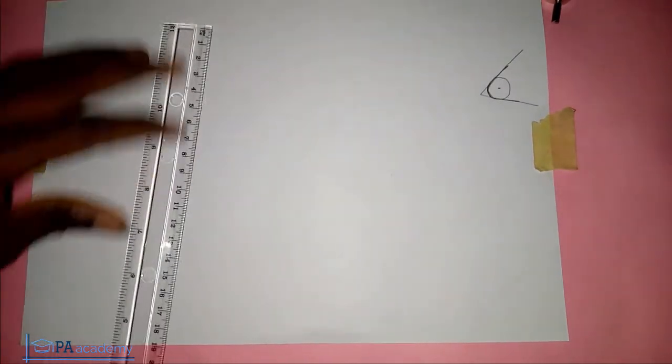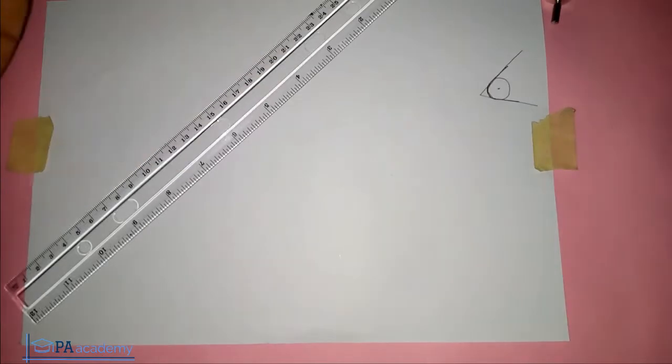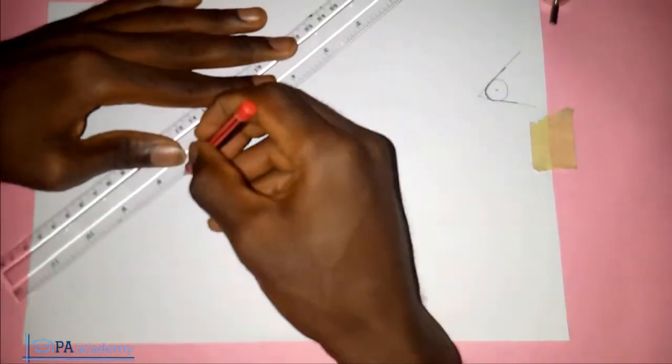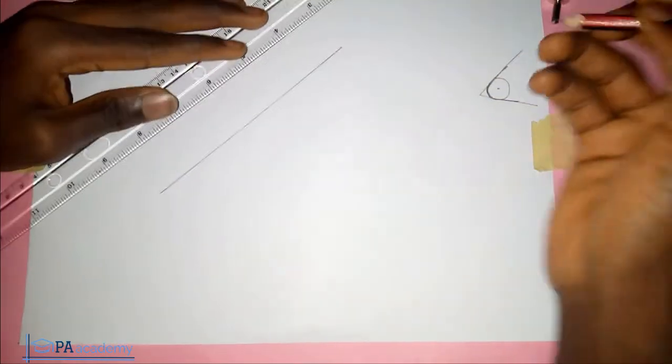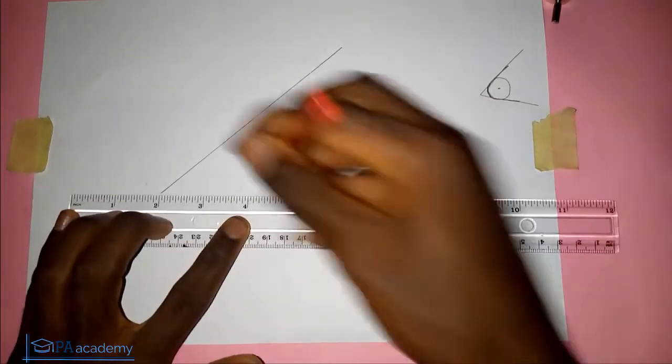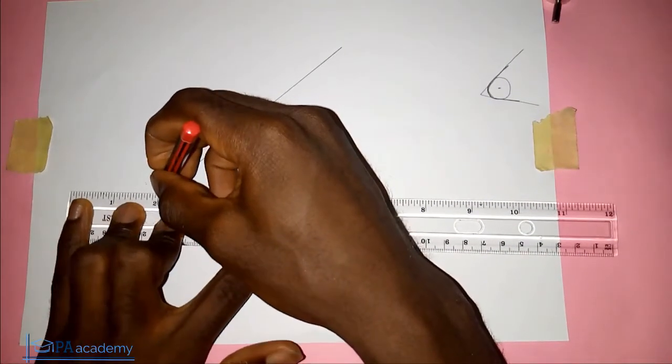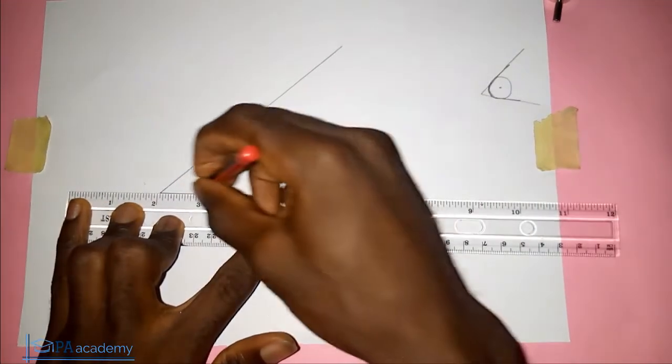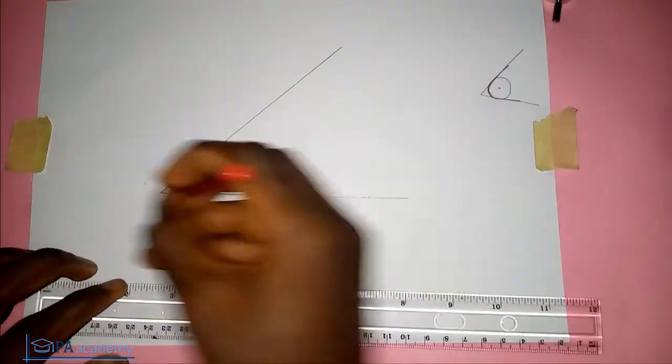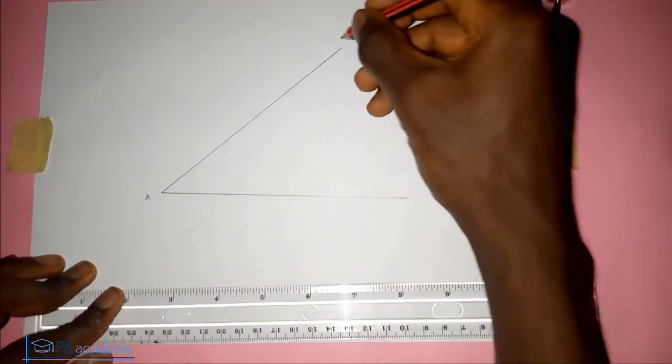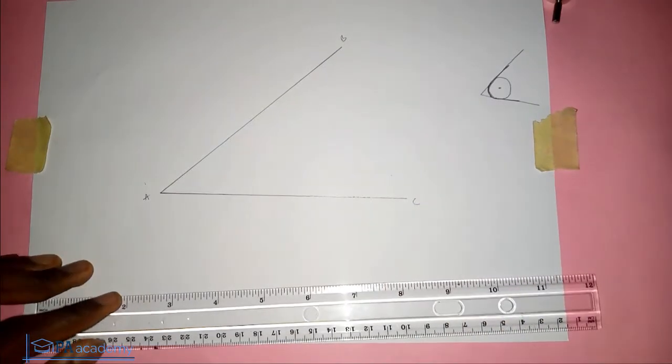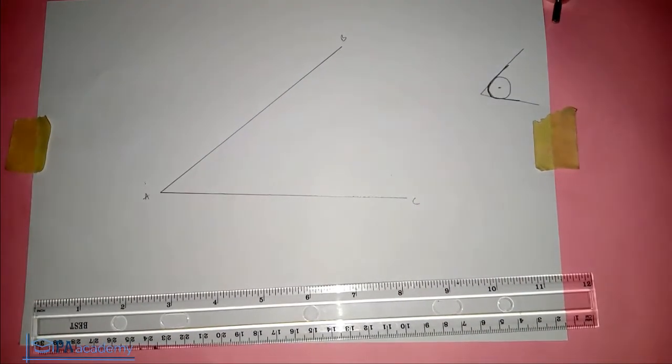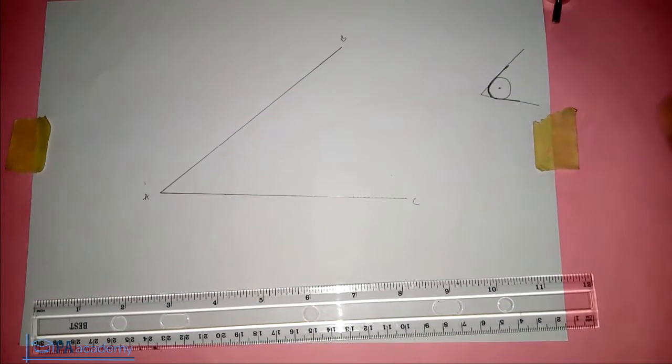So the first thing is to draw the two lines. So let's just pick two random lines. So let's pick this as the first line and then the second line. So let's call this line AB while this from here to here is line AC. So now we want to draw an arc or a circle with the same concept.